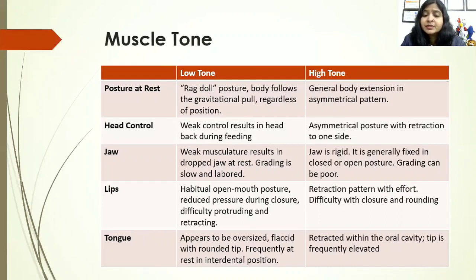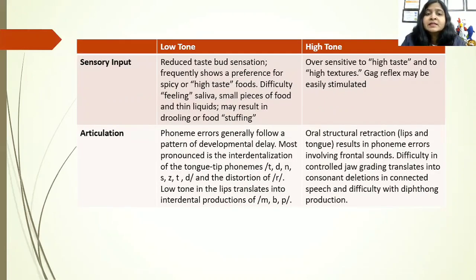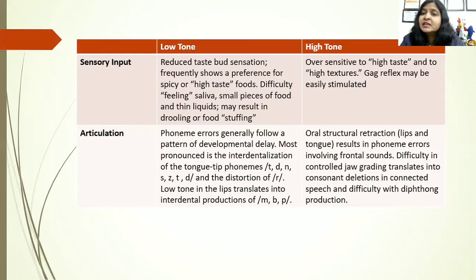For lips, low tone shows open mouth posture as a habit with no strength to close, very reduced pressure when they do close, and difficulty protruding and retracting. In high tone kids, retraction pattern is done with effort and there is difficulty with closure and grading. For tongue with low tone, it may appear oversized and flaccid with a rounded tip. With high tone, the tongue is retracted within the oral cavity and the tip is frequently elevated. For sensory input, low tone kids usually need high sensory input — high taste foods and overstuffing — whereas high tone kids are oversensitive to high textures or tastes. Articulation patterns also differ between low and high tone.